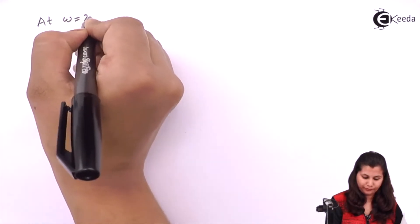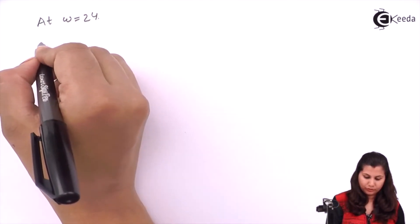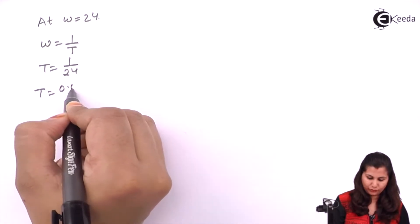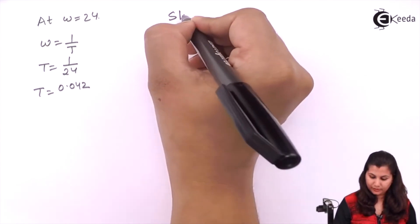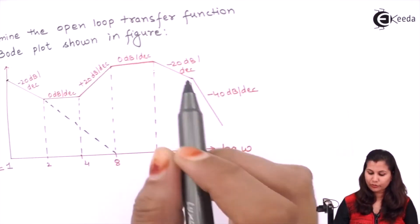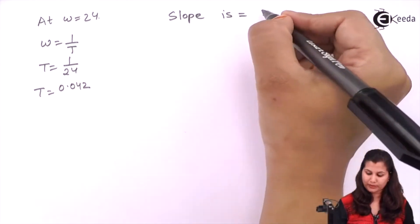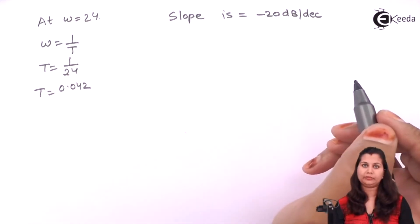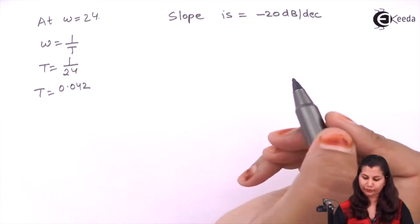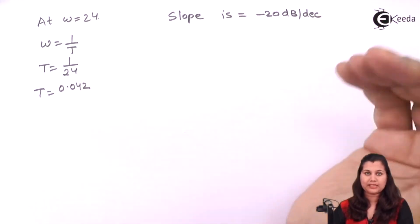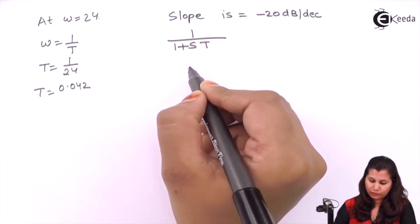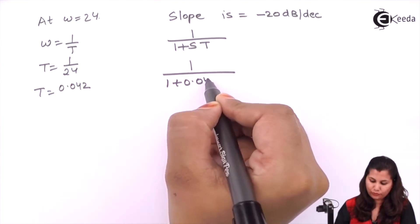At omega equals 24: T = 1/24 = 0.042. The slope changes from 0 to minus 20 dB per decade, a change of minus 20 dB per decade. Minus means it is in the denominator and 20 means it is a first order factor, so the factor is 1/(1 + 0.042s).